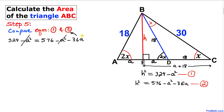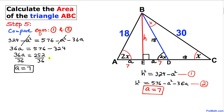Moving −36A to the other side gives +36A, and moving 324 to the other side: 36A = 576 − 324 = 252. After all these calculations, our value of A turns out to be 7.